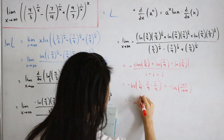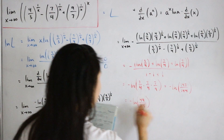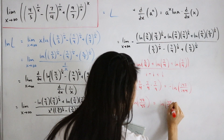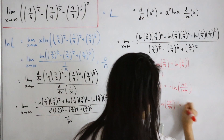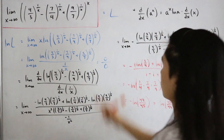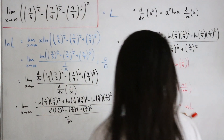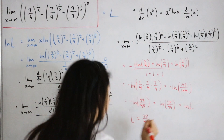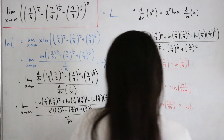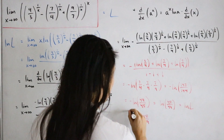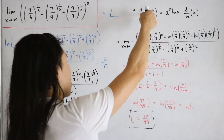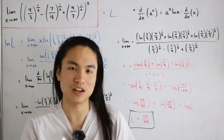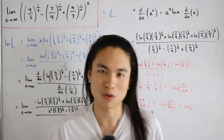Computing: 3/4 × 7/4 × 7/9 = 147/144, which reduces to 49/48. So we have −ln(49/48), which equals ln(48/49). Since this equals ln(L), we get L = 48/49. That's the final answer to this limit, using L'Hôpital's rule together with the exponential derivative rule where the base is a constant.